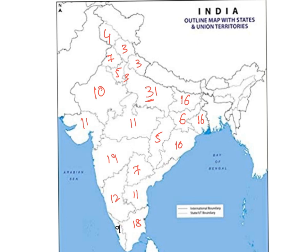For smaller states: Goa has 1 seat, and Pondicherry Union Territory also has 1 seat. For the Northeastern states and Sikkim: Sikkim has 1 seat, Arunachal Pradesh has 1 seat, Nagaland has 1 seat, Manipur has 1 seat, Mizoram has 1 seat, Tripura has 1 seat, and Meghalaya has 1 seat. Add all these seven ones and you get 7, which is the number of seats allocated to Assam.